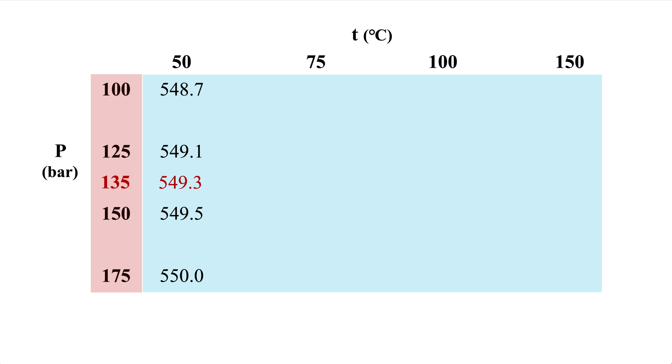Now we move to the next column at t 75 degrees Celsius, and similarly we get 381.7 corresponding to 135. We do the same thing with columns 100 and 150.